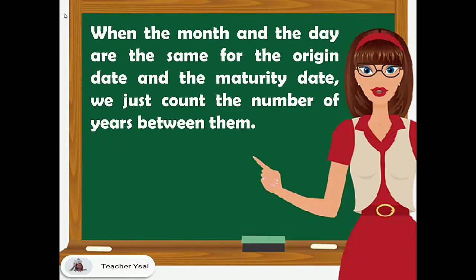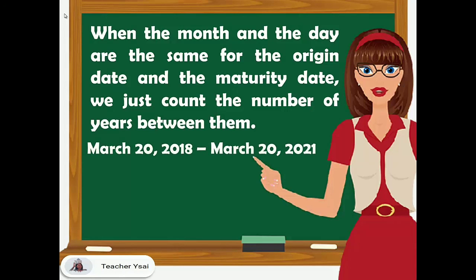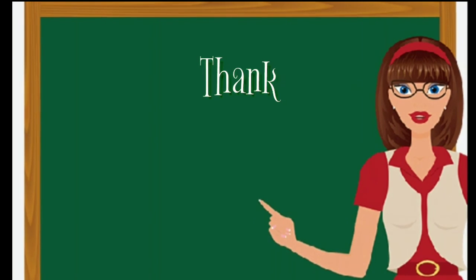When the month and the day are the same for the origin date and the maturity date, we just count the number of years between them. For example, March 20, 2018 to March 20, 2021 — since the month and day are the same, we count the number of years, which gives us three years. Another method is to subtract the year loaned from the year to be repaid: 2021 minus 2018 equals three years.